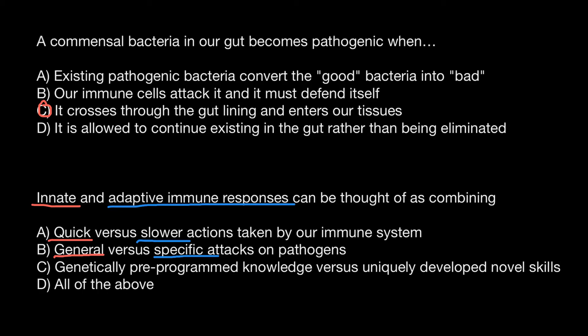Variant C: genetically pre-programmed knowledge versus uniquely developed novel skills. Genetically pre-programmed knowledge is characteristic of the innate immune system, while uniquely developed novel skills are characteristic of the adaptive immune system. So the correct answer is D — which combines all of the above. And this is all for today.